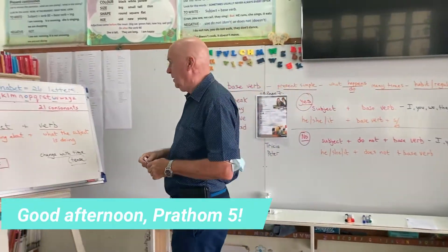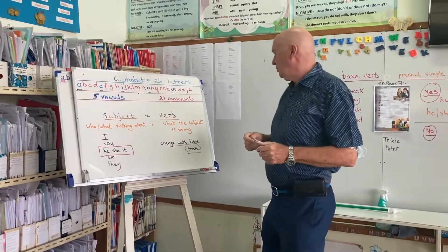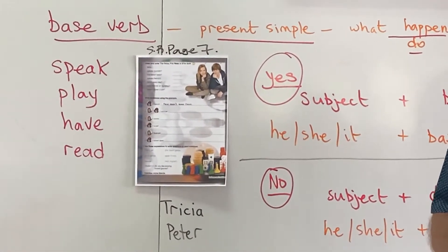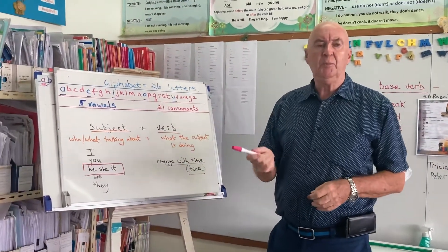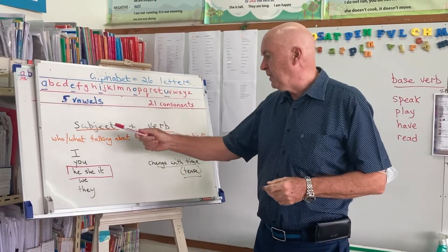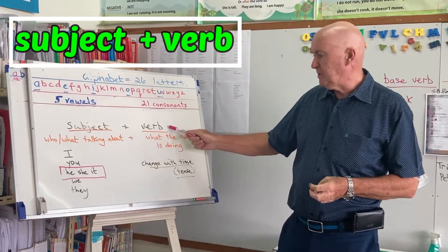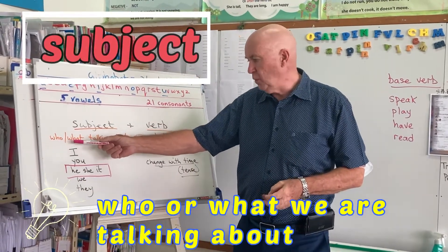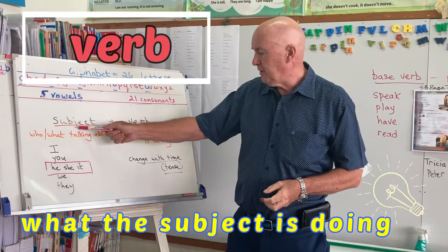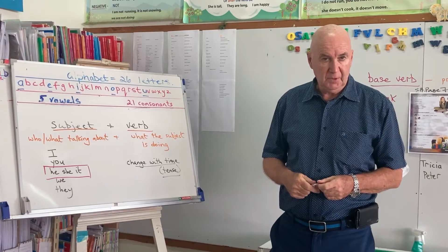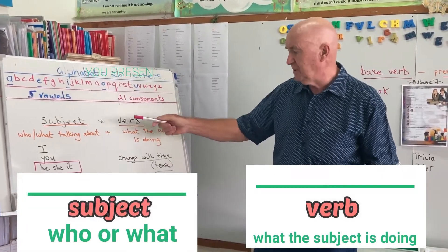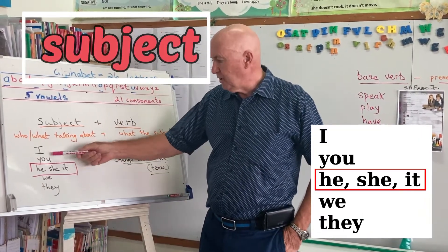Good afternoon. We're going to use the Cool Kids student book page seven today, but first we need to do a little bit of listening. Now, most of the time when we talk or read in English, the first thing we talk about is the subject, and then after the subject we have the verb. The subject is just who or what we're talking about, and the verb tells us what the subject is doing.